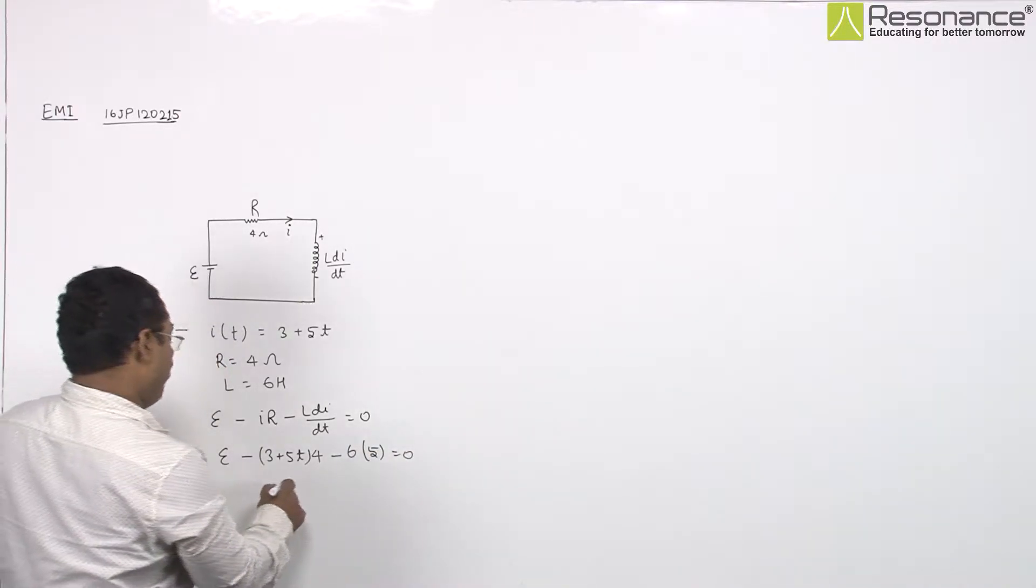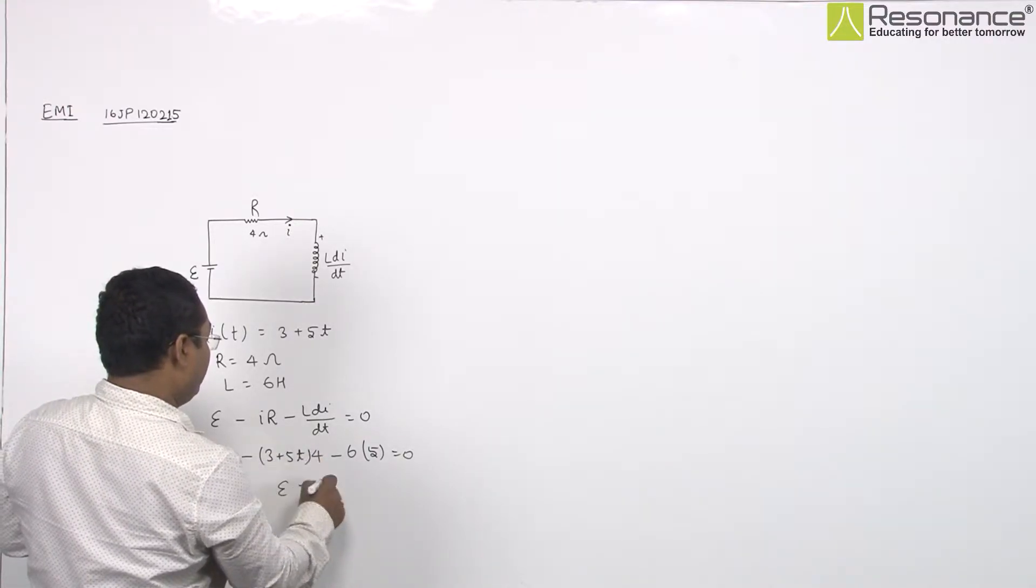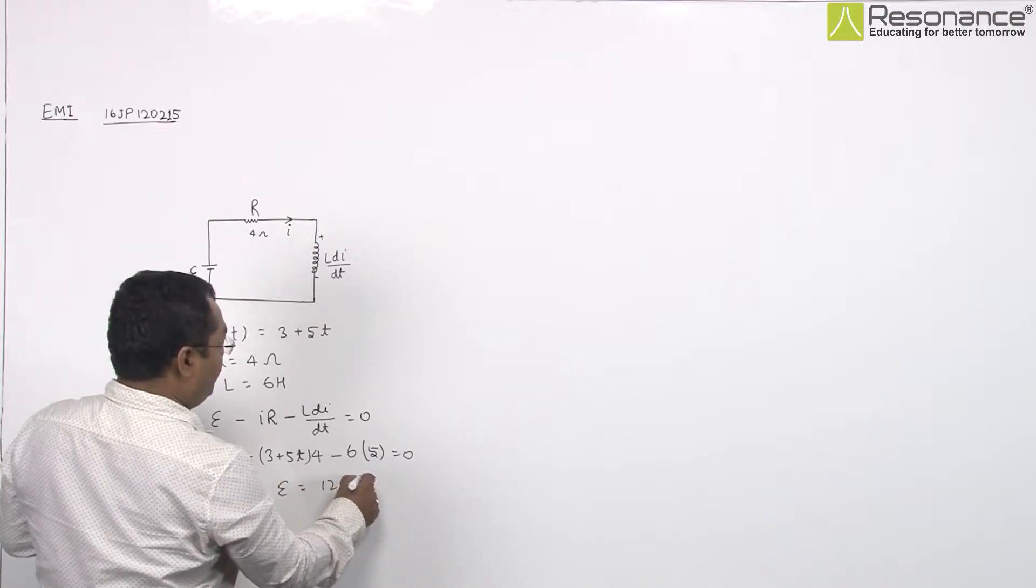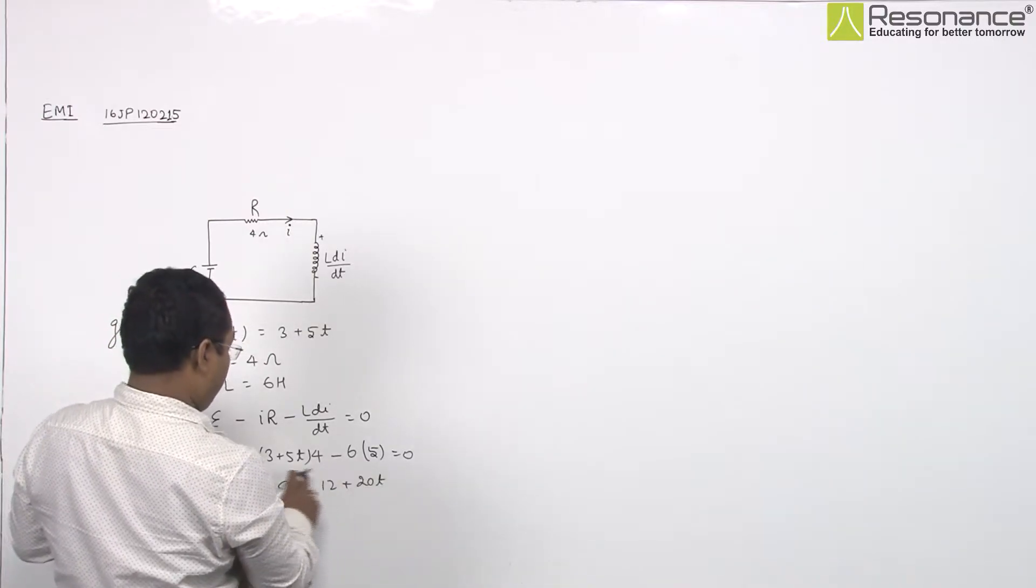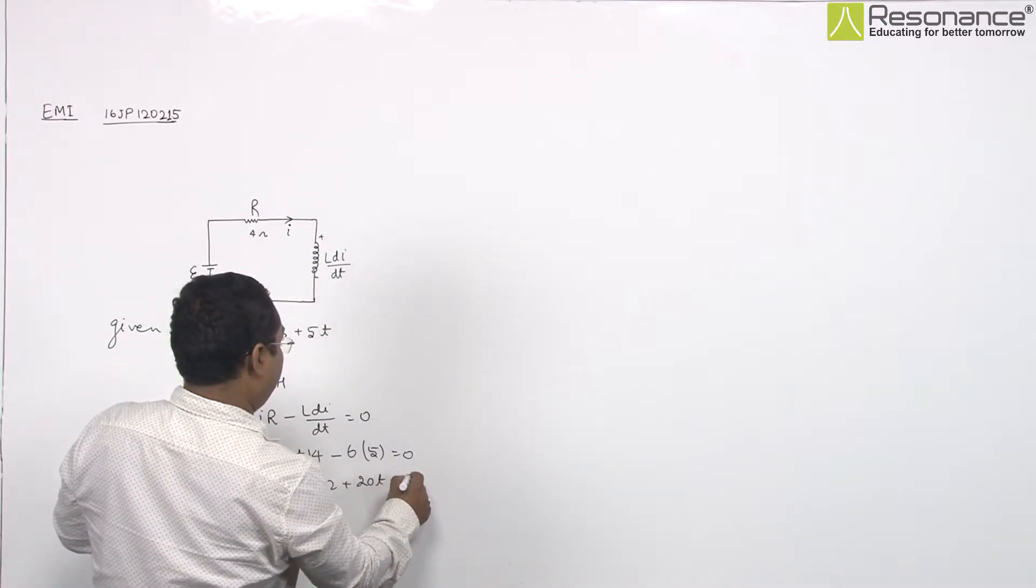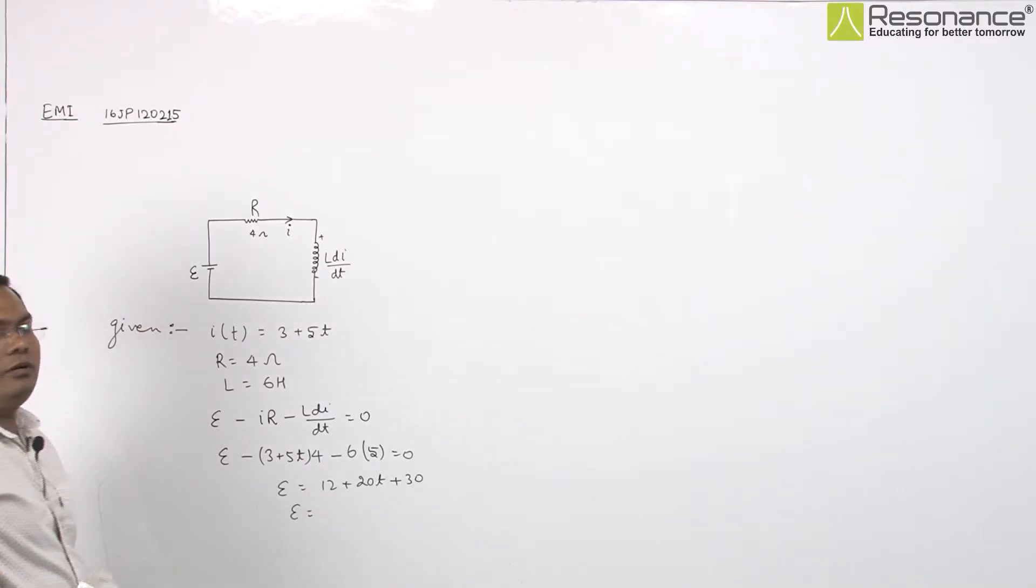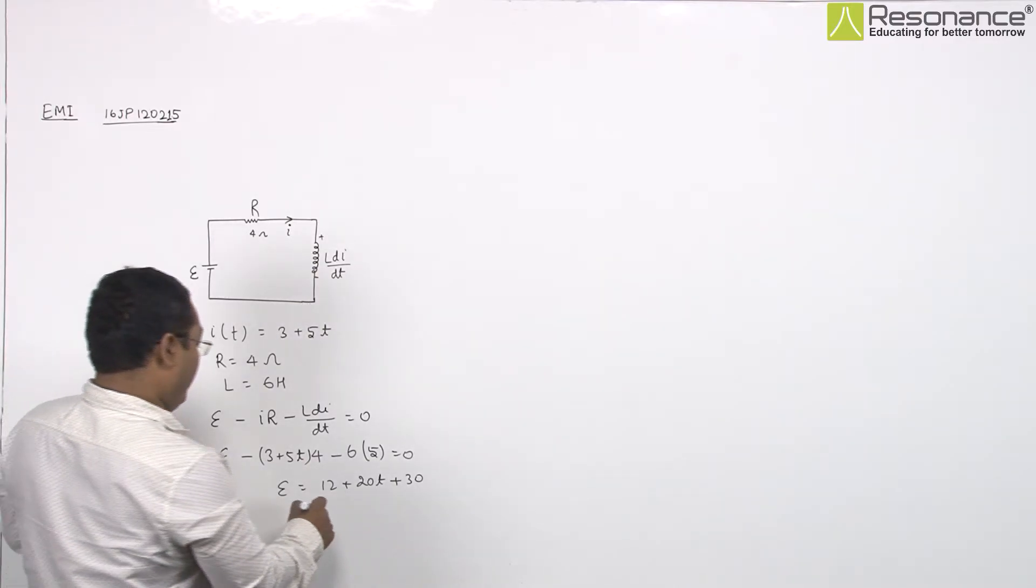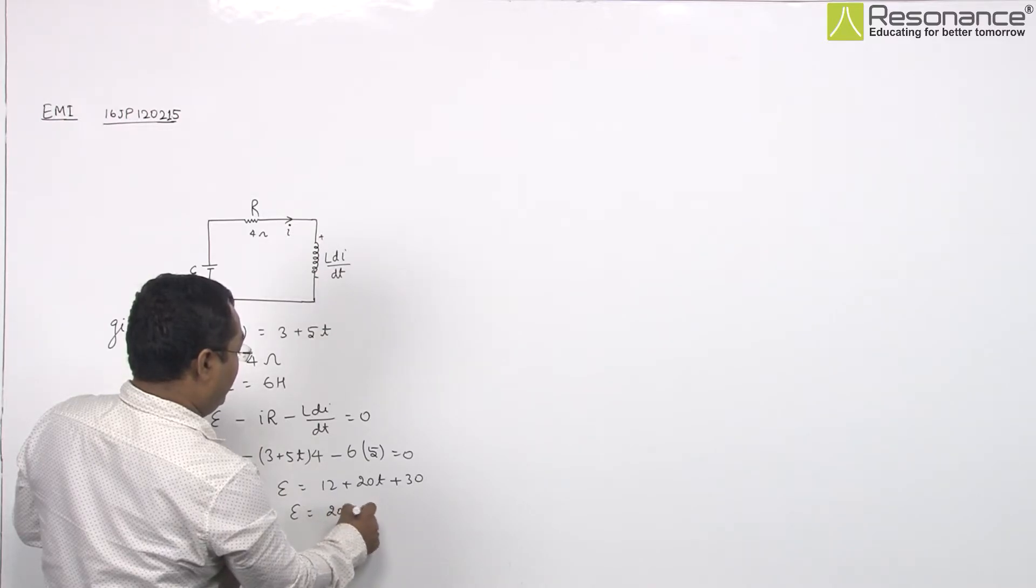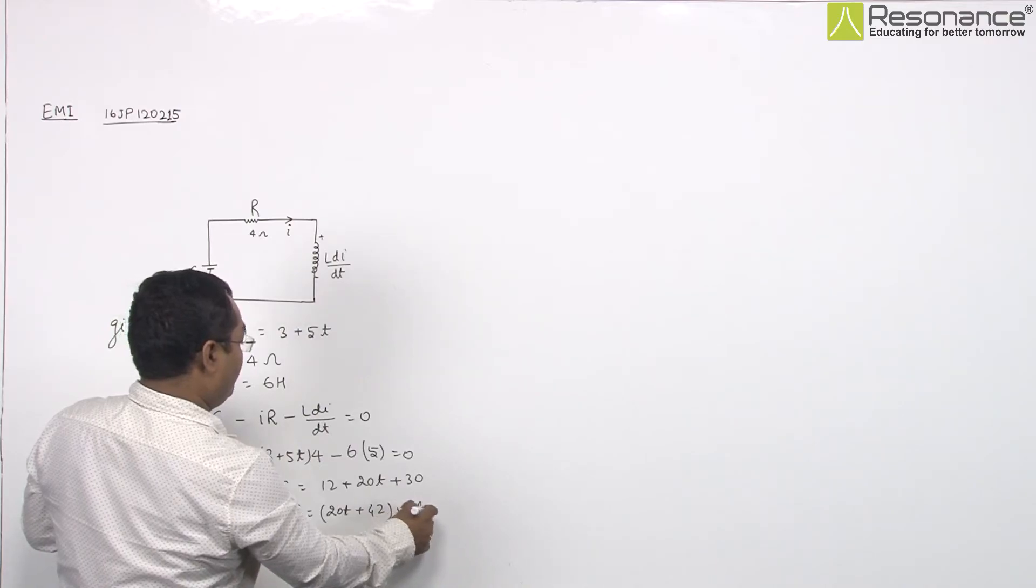By solving this equation, we can get E equals 3 into 4, 12 plus 5T into 4, 20T and plus 6 into 5, 30. So, function of EMF in T will be E equals 20T plus 42 volt.